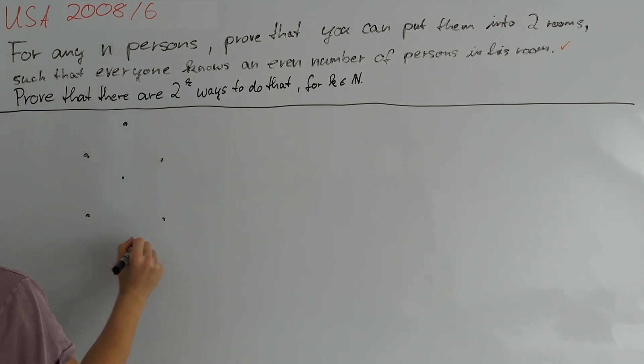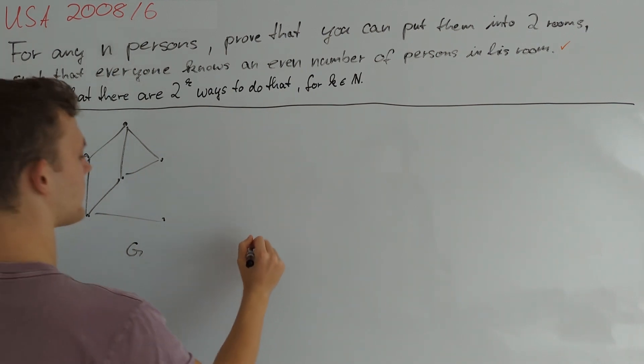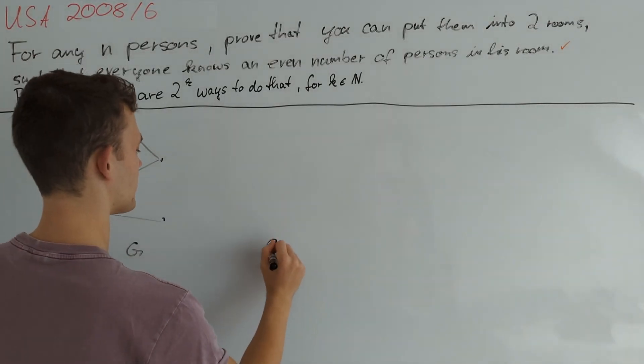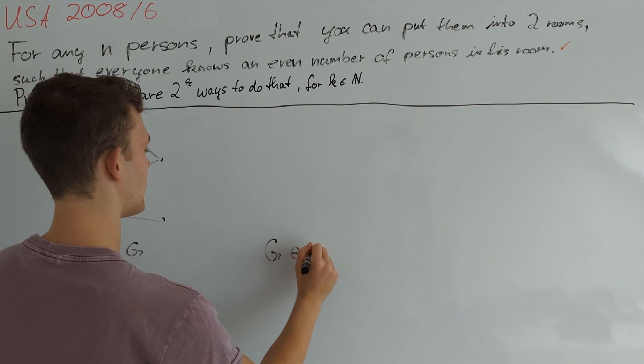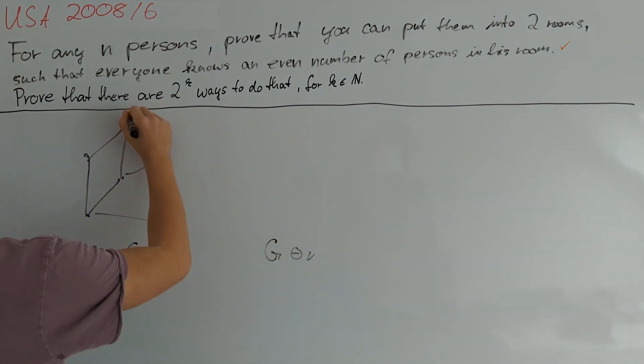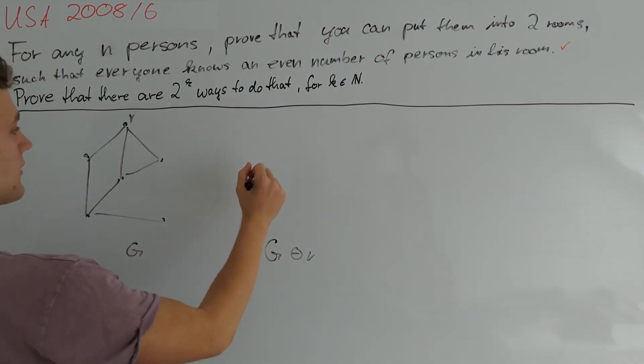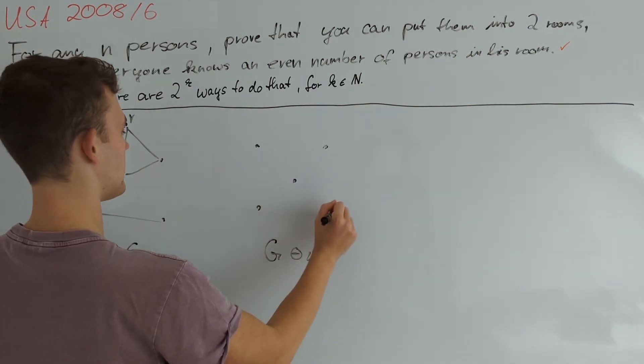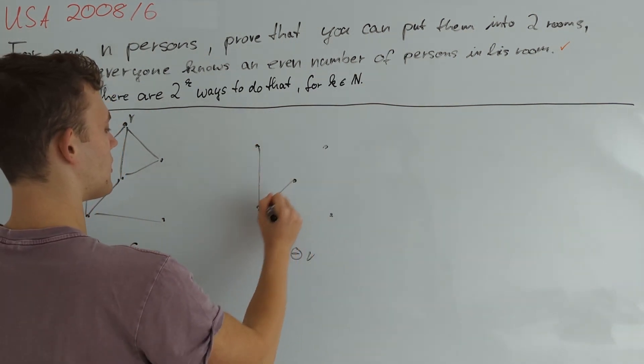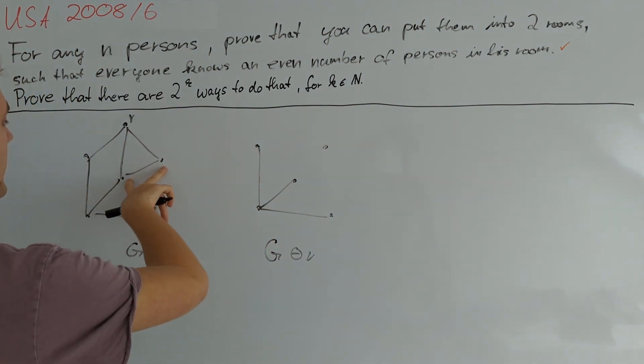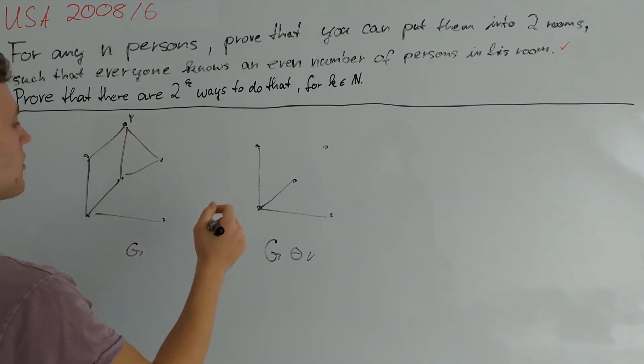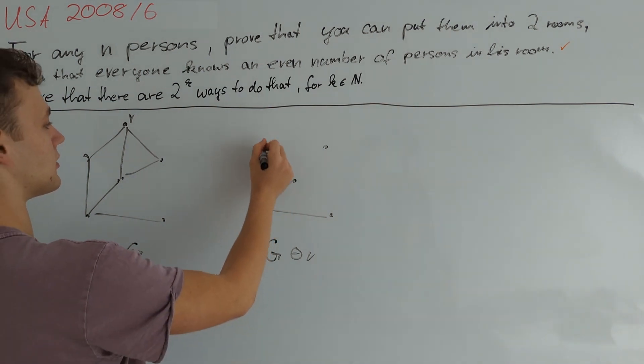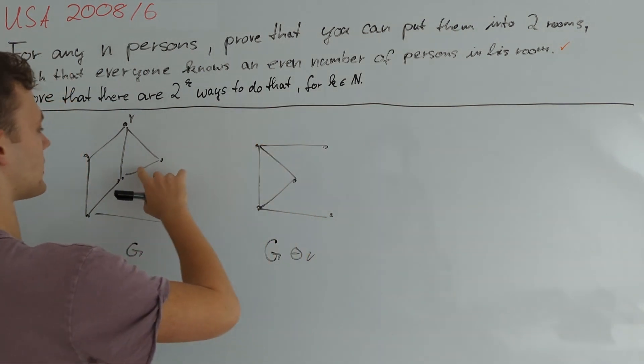So let's consider some graph G and then we defined a new graph which I am going to call G minus V from now on, where we take some vertex of G. And first of all we start by removing that vertex. And furthermore between all pairs of neighbors of V we flip their neighborhood relationship.